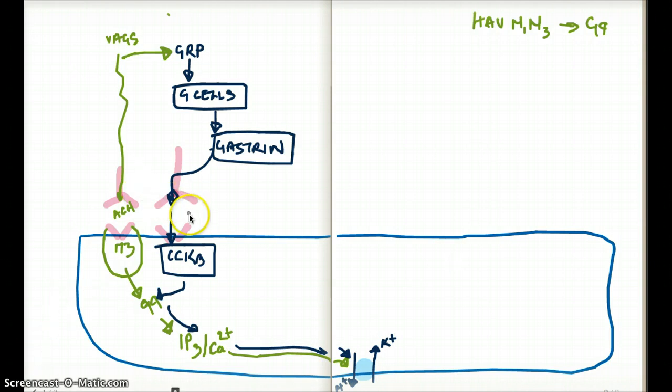Now this stimulation, this CCKB stimulation is also going to stimulate another type of cell, and those are enterochromaffin-like cells. This is going to stimulate that.